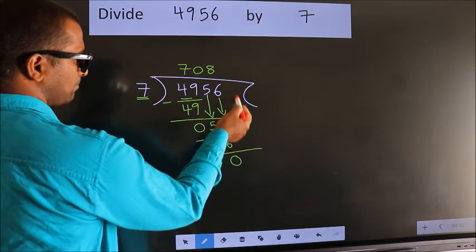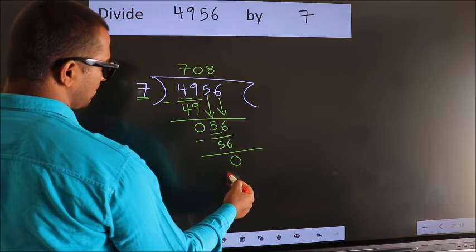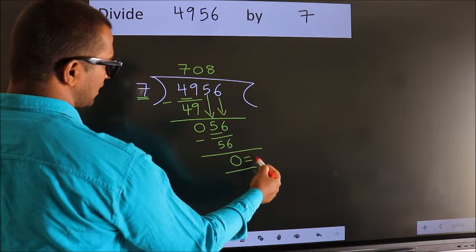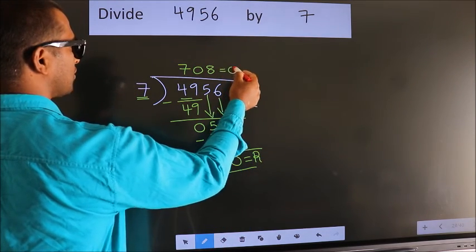No more numbers to bring it down. So we stop here. This is our remainder. This is our quotient.